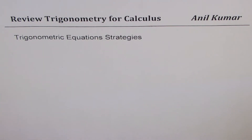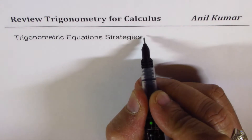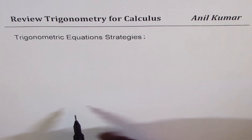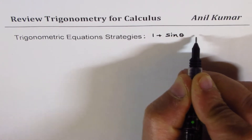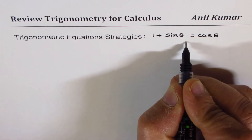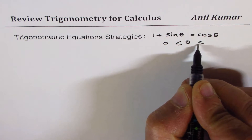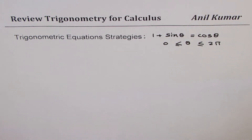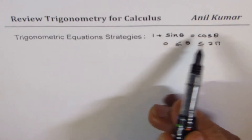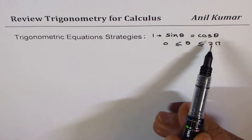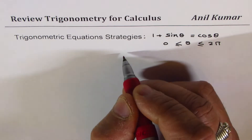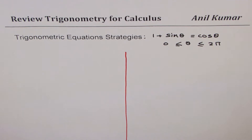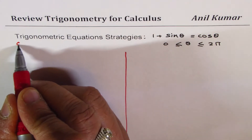Now let us see how to solve trigonometric equations. We'll actually try to understand a strategy here. Let me take an example: 1 plus sine theta equals to cos theta, and let us say theta is between 0 to 2 pi. In this particular equation you will notice that we have both types of terms, and it becomes really difficult to solve. The strategy is to write in one form — either in sine or in cosine. I'll show you two different ways, so we'll do Case 1.